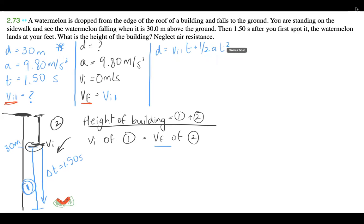30 is equal to VI1 times 1.5 plus half of 9.8 times 1.5 squared. And I'm going to plug that into my calculator.